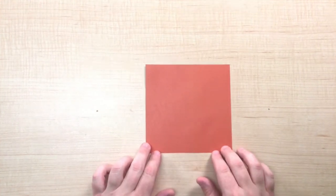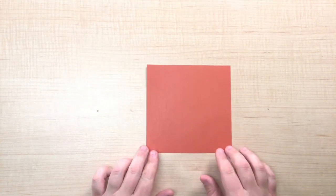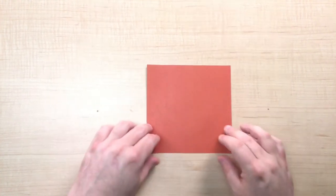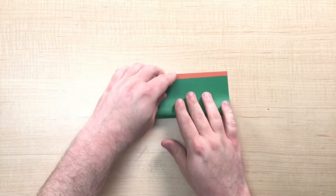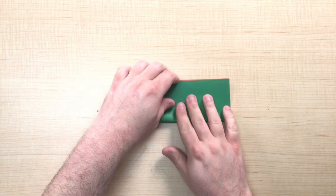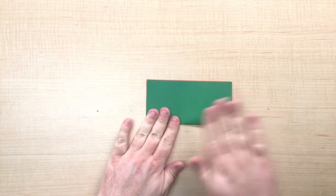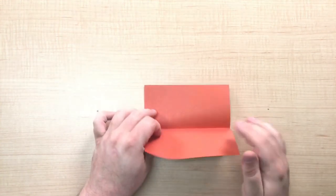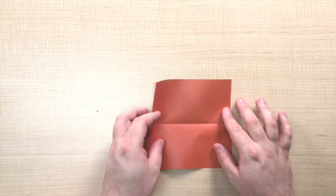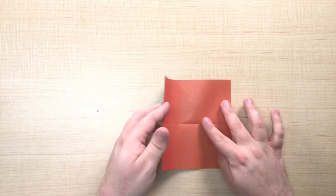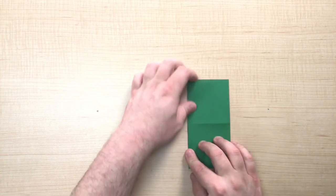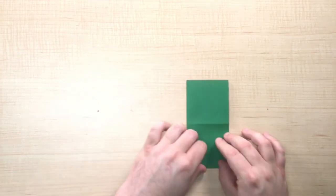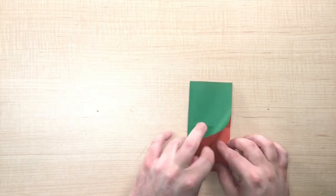Begin by having your origami paper in a square formation and take the bottom and fold it up so that it touches the top and unfold. Next take the left side and fold it in so that it touches the right and then unfold.